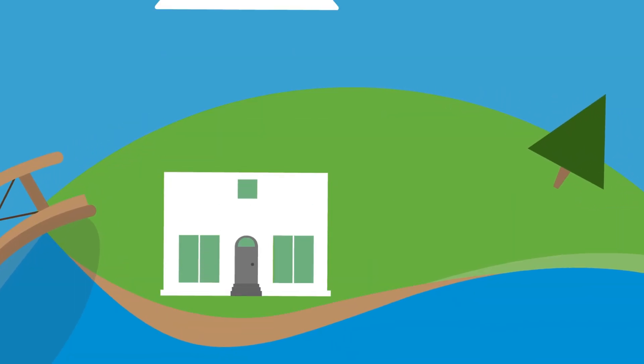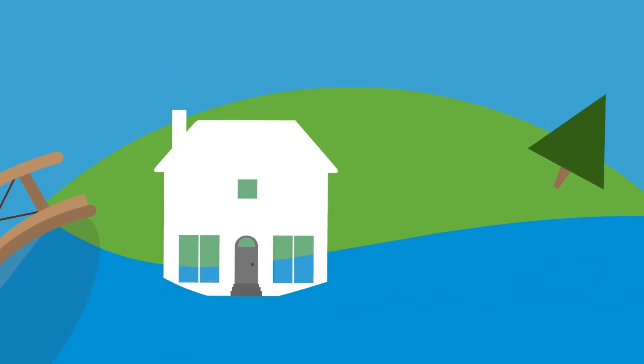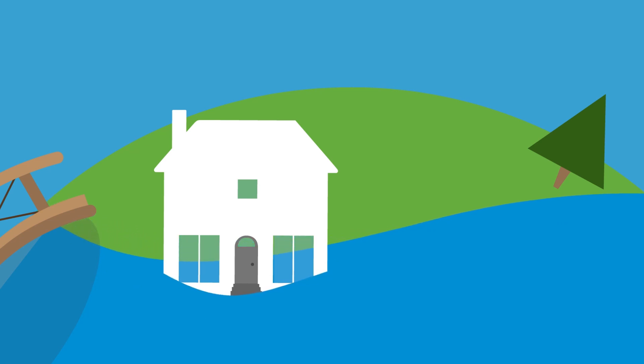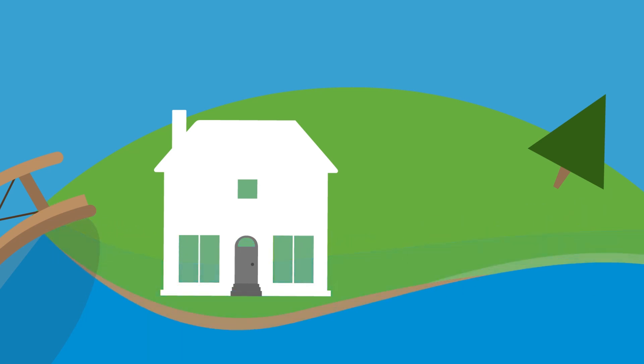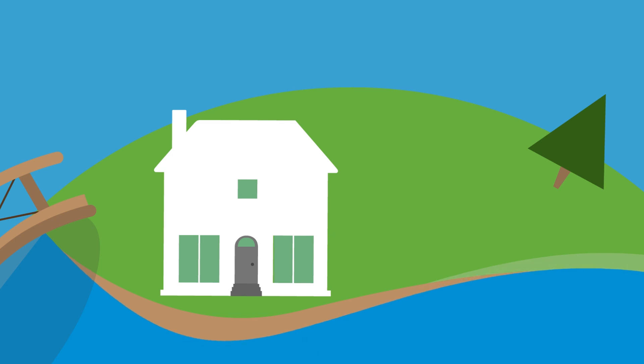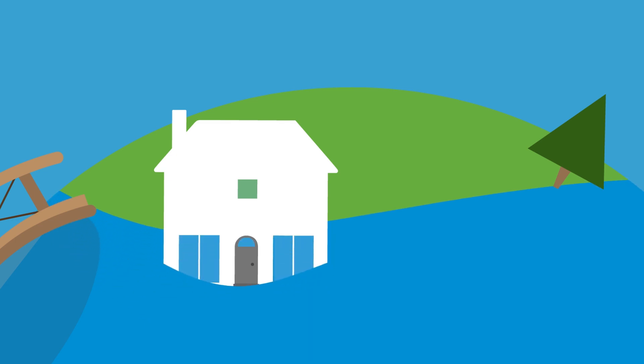Imagine a house by a river that is known to flood. No one knows if the river will overflow again, but because the river is prone to flooding, the risk to the house is increased.